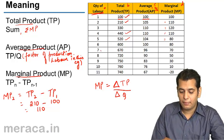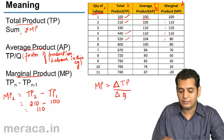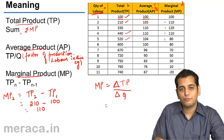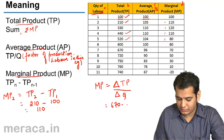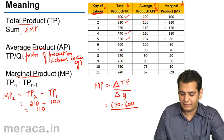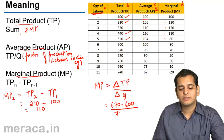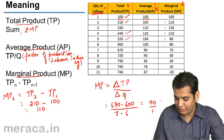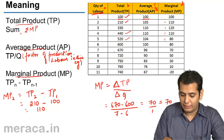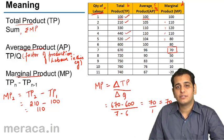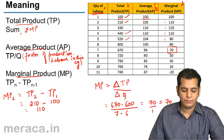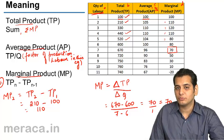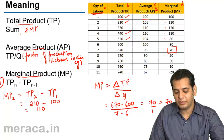Let's find the Marginal Product when the seventh labor is employed. At this level, Total Product is 670 and the Total Product before this level was 600. Therefore, the change is 670 minus 600 divided by the change in Q, which is 1. That gives 70 divided by 1, which equals 70 — matching the Marginal Product when seven labors are employed. So we have two formulas: first, TP(n) minus TP(n-1); and second, delta TP divided by delta Q.